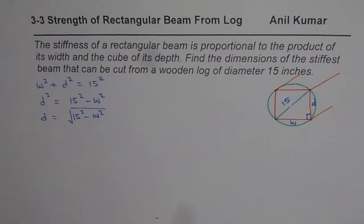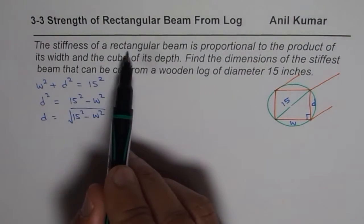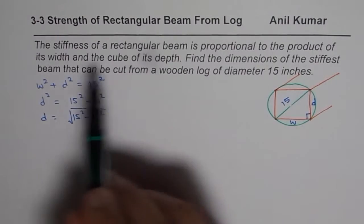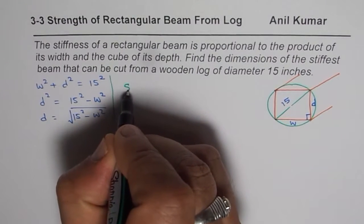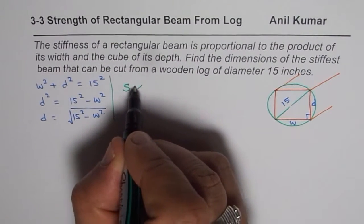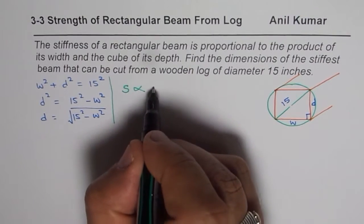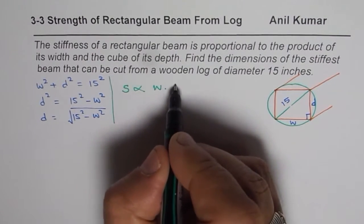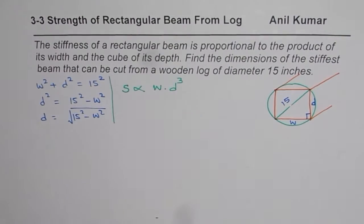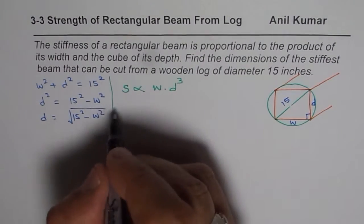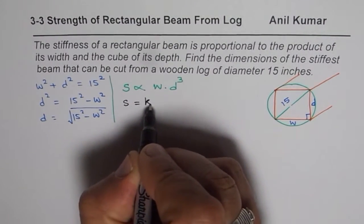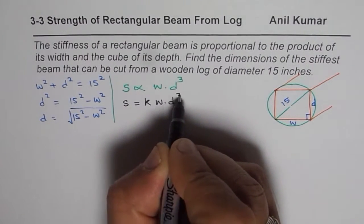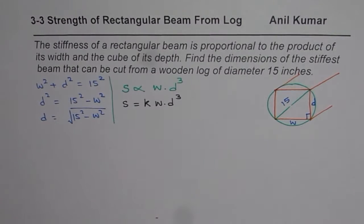We are also given that stiffness of a rectangular beam is proportional to the product of its width and the cube of its depth. So if S is the stiffness, we can write S = K · W · D³, where K is a proportionality constant.